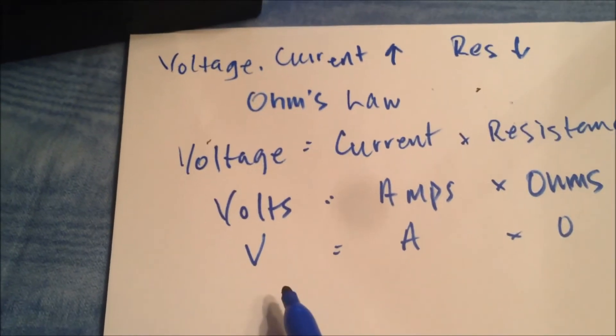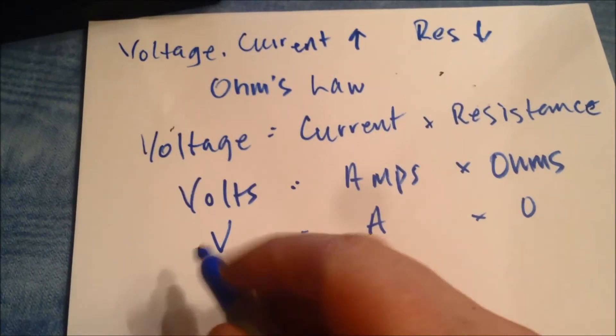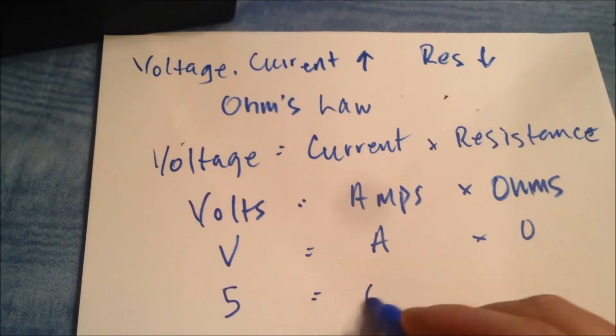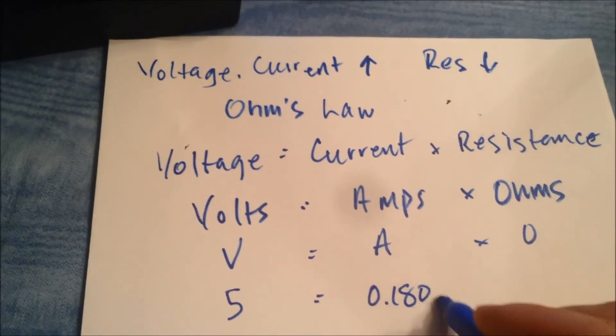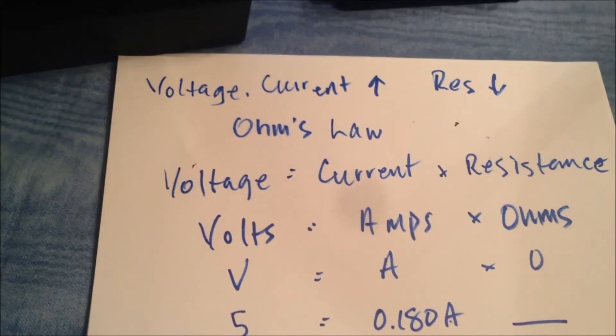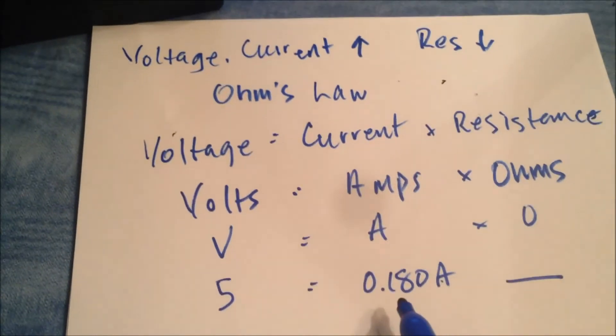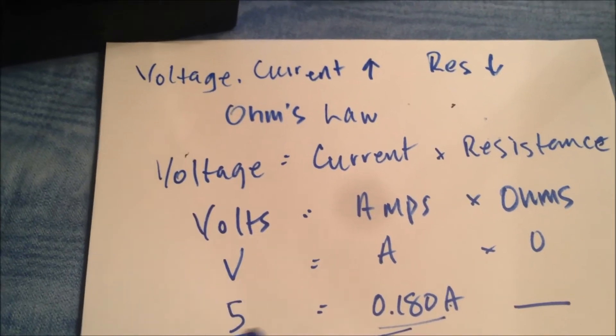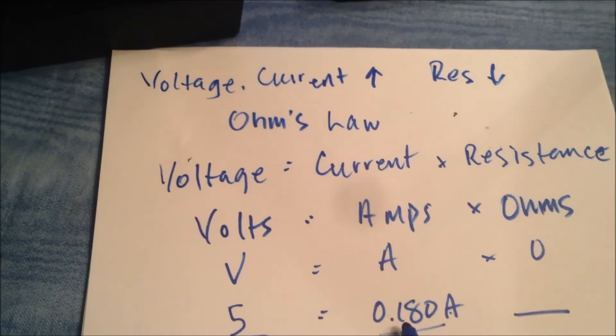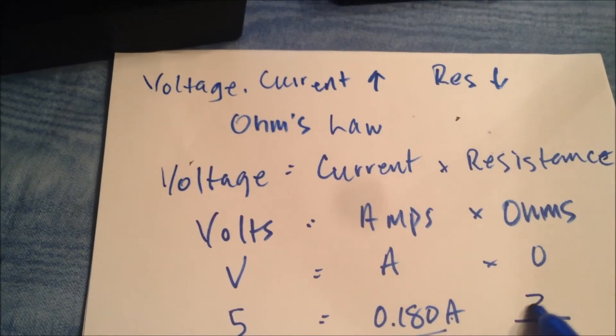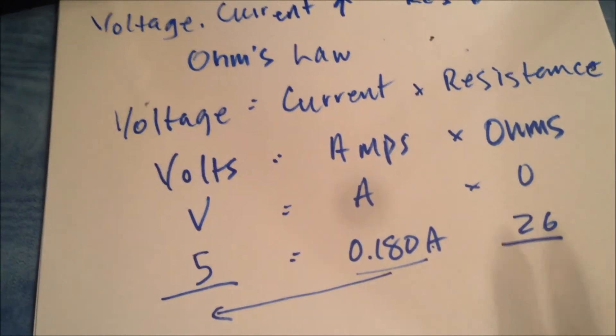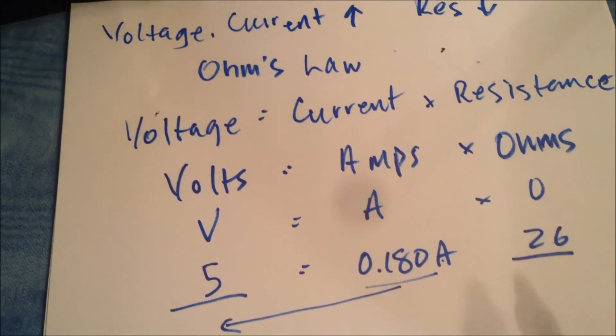So Ohm's Law then calculates the missing component resistance. If I've got 5 volts that equals 0.18 amps, then I need to figure out what the resistance is. It's a simple matter of algebra. So dividing 5 by 0.18, I think it works out to 26. So 26 ohms is the resistance. I'll call that the minimum resistance, because that is the resistance that's existing in the power supply.